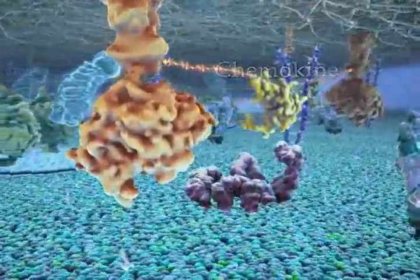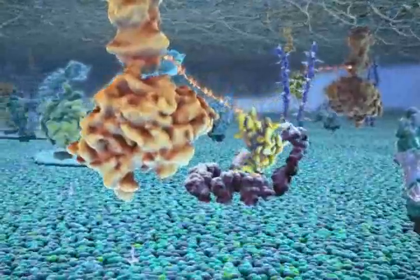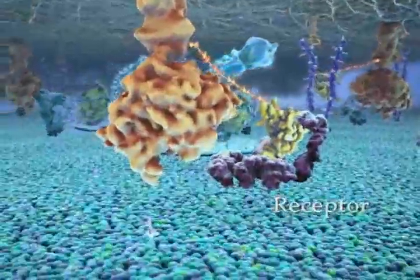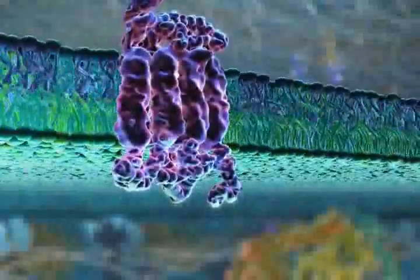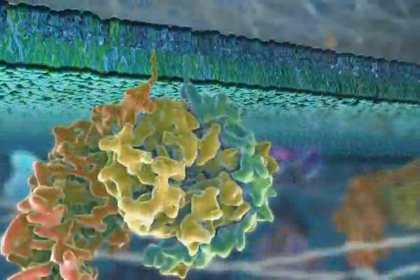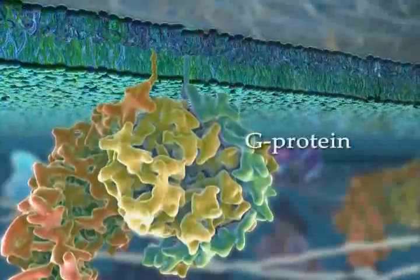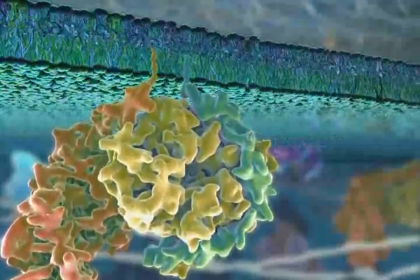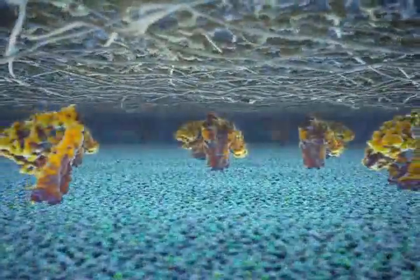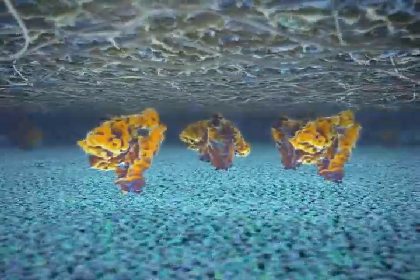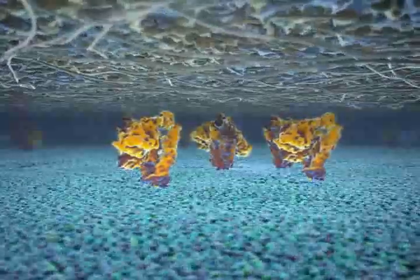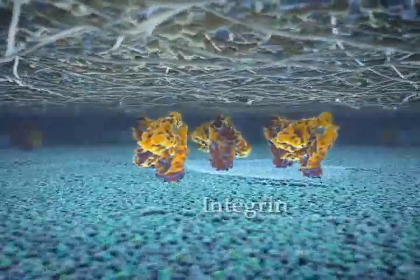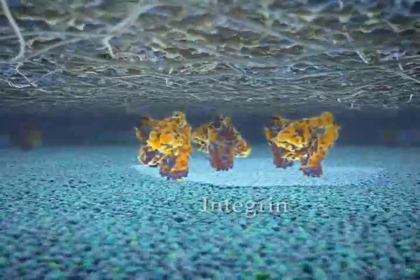At sites of inflammation, chemokines secreted by endothelial cells bind to the extracellular domains of G-protein coupled membrane receptors. This binding causes a conformational change in the cytosolic portion of the receptor, and the consequent activation of a subunit of the G-protein. The activation of the G-protein subunit triggers a cascade of protein activation, which in turn leads to the activation and clustering of integrins inside lipid rafts.